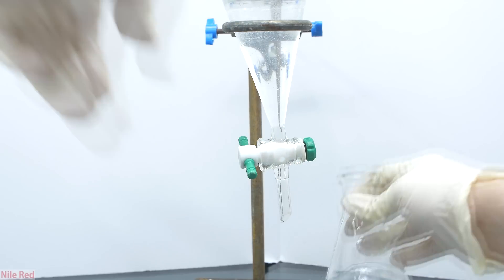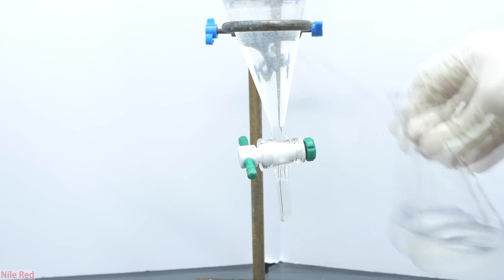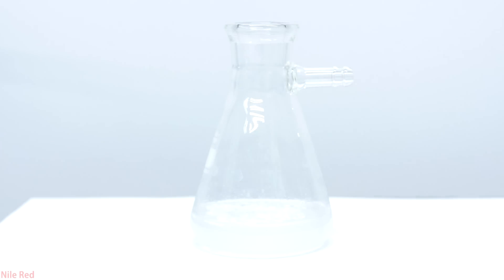Our now colorless methyl iodide solution is drained into an Erlenmeyer flask. It's a little blindingly white and hard to see here, but what we're doing is adding calcium chloride to remove any methanol or water that might remain. You can see that before it's added it was a little bit cloudy, but afterwards it quickly clears up.